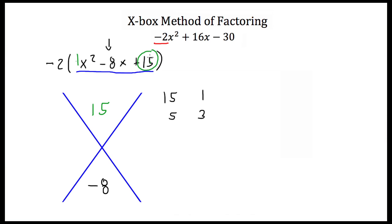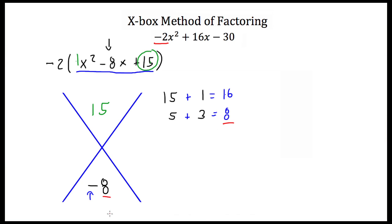Then go back to your top number. If this top number is positive, then you want to add your factors. So 15 plus 1, and 5 plus 3. 15 plus 1 is 16, and 5 plus 3 is 8. Now ignoring this negative, if any of your factors added together are the same as this number, then you've found your factors. In this case, we have an 8 and we have an 8.